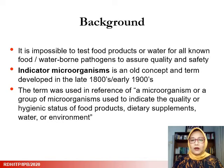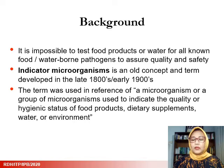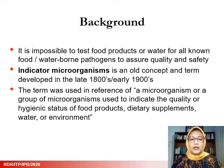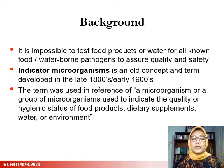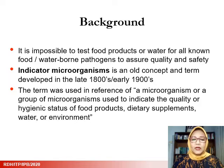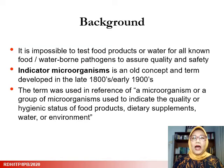Let's start with the background of indicator microorganisms. We all realize that it is impossible to test food products or water for all known pathogens to assure quality as well as safety. That's why at the end of the 1800s or early 1900s, people proposed the concept of indicator microorganisms — a microorganism or group of microorganisms used to indicate the quality, hygienic status of food products, dietary supplements, water, and/or environment.